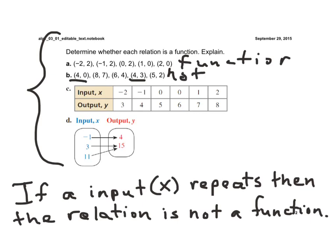Letter C. If you notice, the input values, the 0 is twice. The 0 is paired with a 5, and the 0 is also paired with a 6. So again, this is not a function.